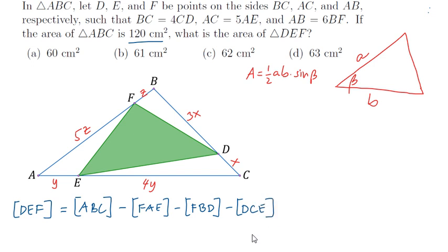Now, we only need to find or come up with expressions for the areas of FAE, FBD, and DCE using this formula. We already know the area of ABC, and that is 120.